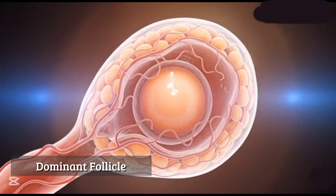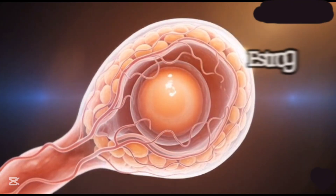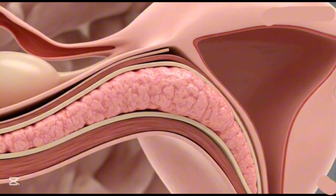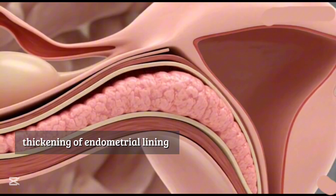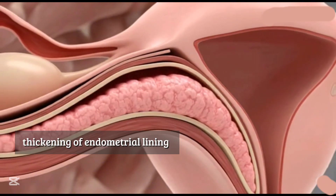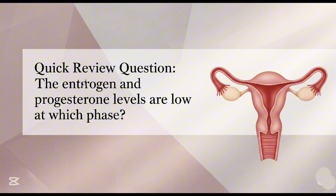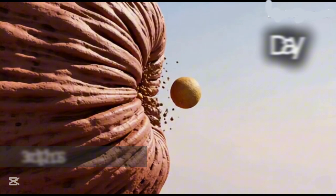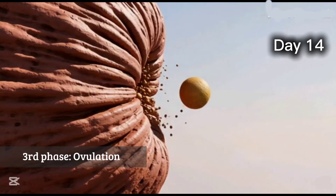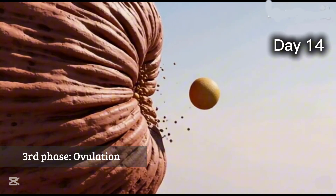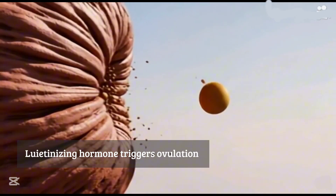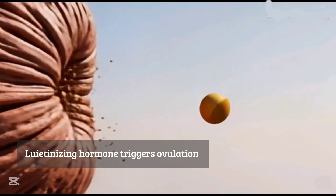As the egg grows, the ovary produces estrogen. Estrogen thickens the uterine lining, preparing for pregnancy. Quick question: estrogen and progesterone levels are low at which phase? At day 14, ovulation takes place — luteinizing hormone triggers ovulation.